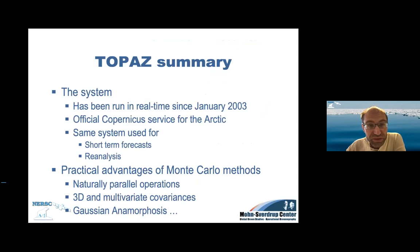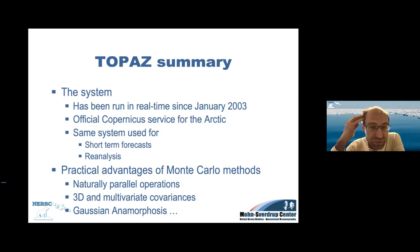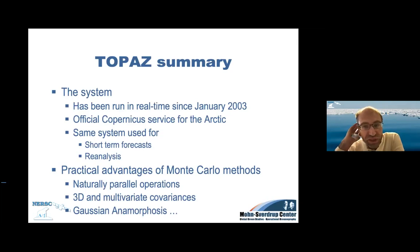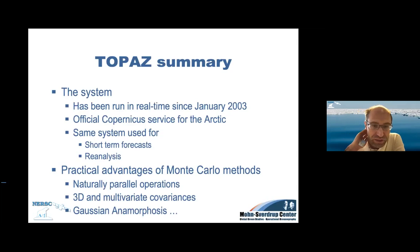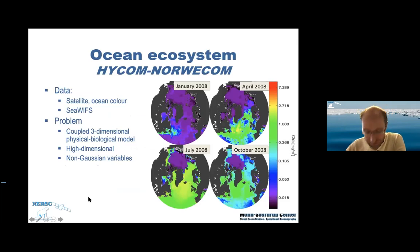As a summary, TOPAZ has been running for a long time and is now the Copernicus Marine Service system for the Arctic, used for short-term forecasting and reanalysis. The advantages of a multi-column ensemble method are that it's naturally parallel on supercomputers, members run independently of each other, you obtain 3D multivariate coherences automatically, and you can use Gaussian anamorphosis.